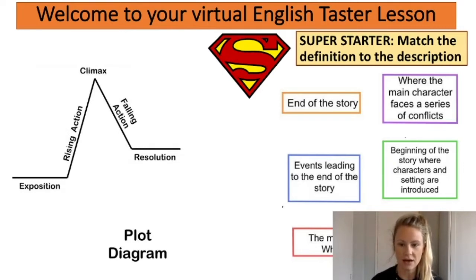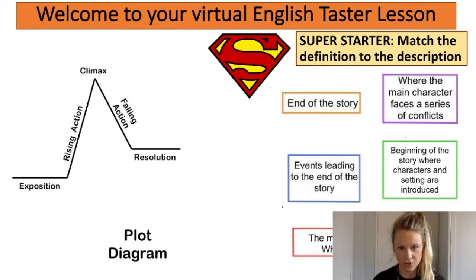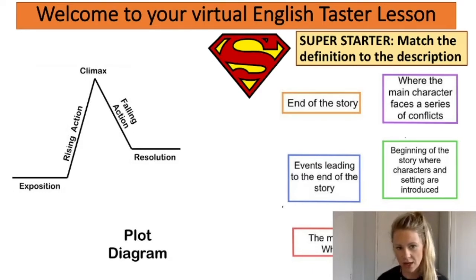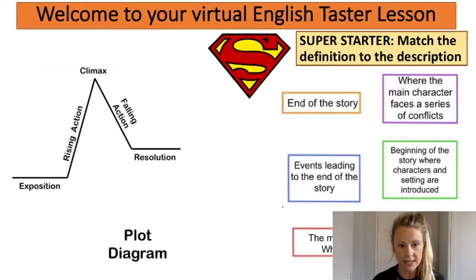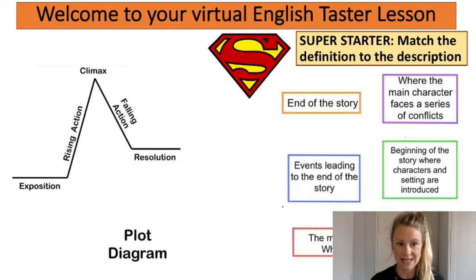To help you with this I've written the description of each part in a coloured box. What I'd like you to do is match the description in the coloured box to the part of the story. For example, what is exposition? Which coloured box best describes what you think the exposition at the start of the story does? You should spend about one minute trying to match the definition to the part of the story. If you'd like to write a short story after this lesson, I suggest you quickly copy down that diagram so that you get all of this information.